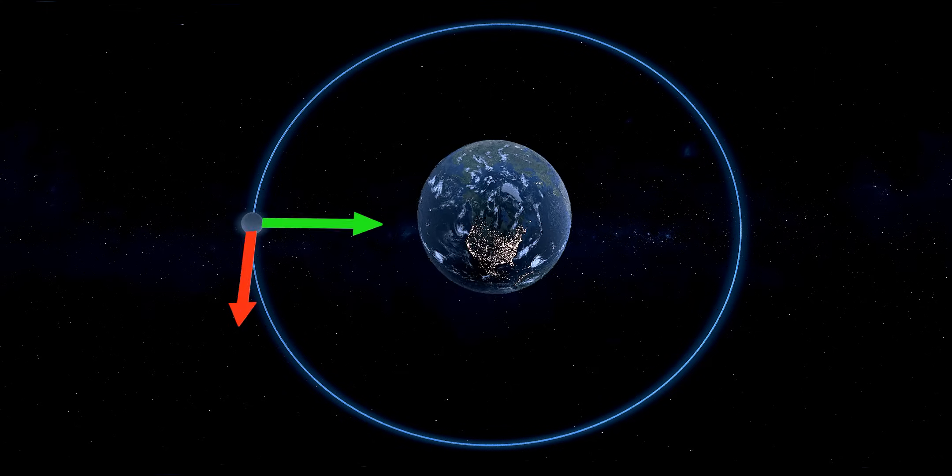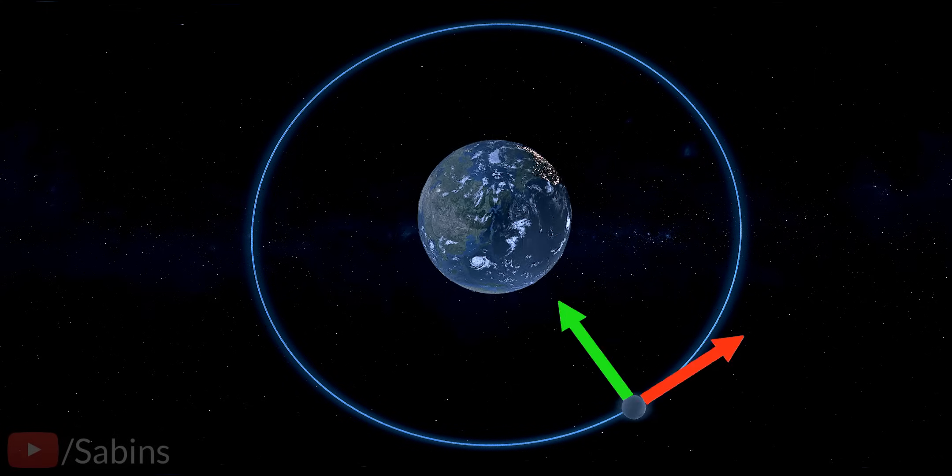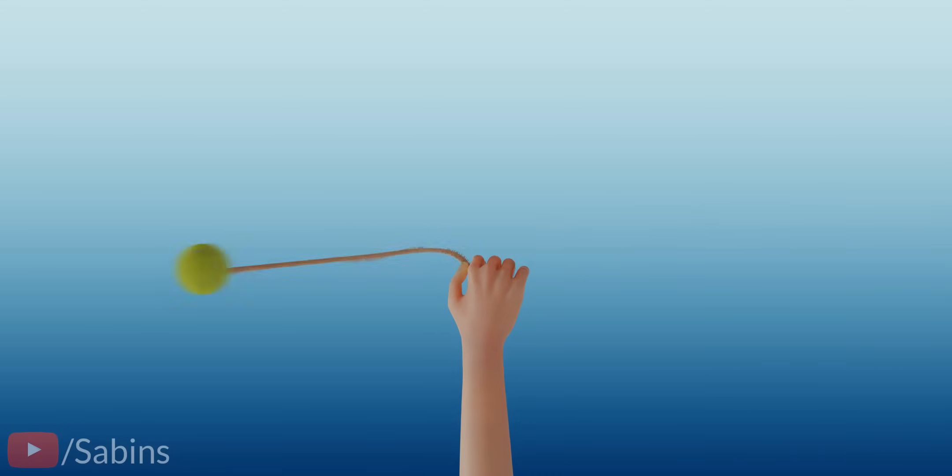When the Moon revolves around the Earth, the gravitational force acting between the Moon and the Earth provides the necessary centripetal force. Similarly, when you rotate an object attached to a string, the tension in the string provides the required centripetal force.